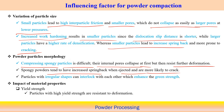On the other hand, particles with irregular shapes can interlock better with each other, which actually enhances the green strength. If spongy particles are present, there is large spring-back and possible crack formation; but if particle shape is very irregular, they can interlock more effectively and therefore enhance the green strength.